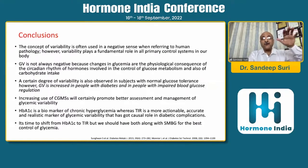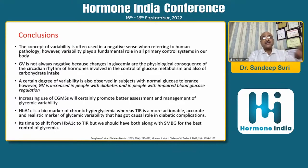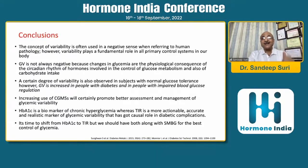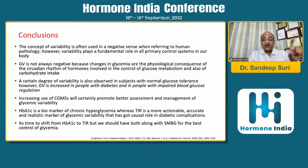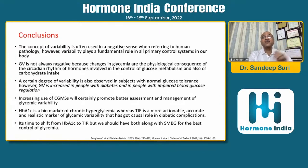In conclusion: the concept of variability is often used in a negative sense in human pathology; however, variability plays a fundamental role in all primary control systems in our body. Glycemic variability is not always negative because changes in glycemia are physiological consequences of various issues. A certain degree of variability is observed even in normal glucose tolerance, but once it is impaired glucose tolerance, type 2 or type 1, it increases significantly. Increasing use of CGMS will promote better assessment and management of glycemic variability. HbA1c is a biomarker of chronic hyperglycemia as mean plasma glucose, whereas time in range is more actionable, more intuitive, more accurate, and a more realistic marker of glycemic variability with a causal role in diabetes complications. We should have both SMBG for best glycemic control and also look at time below range.